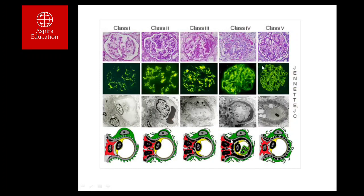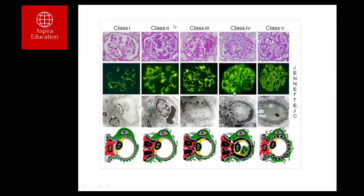To summarize the lupus nephritis classes: Class I — structurally normal kidney with antibodies and complement on immunofluorescence. Class II — antigen-antibody complexes in the mesangium. Class III — proliferative changes in fewer than 50% of glomeruli. Class IV — diffuse proliferative, increased cells and antibodies throughout. Class V — thickening of the glomerular basement membrane. Class VI — sclerosing glomerulonephritis with global sclerosis.